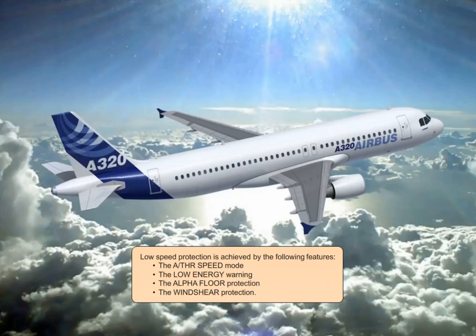Low speed protection is achieved by the following features: the autothrust speed mode, the low energy warning, the alpha floor protection, and the wind shear protection.